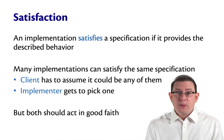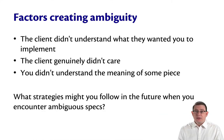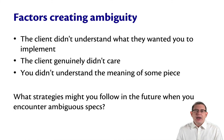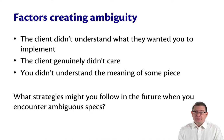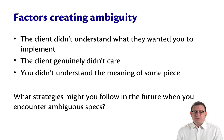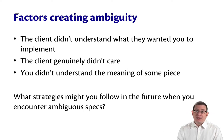But ambiguities can arise. Here are some factors that might create ambiguity. Maybe the client didn't really understand what they wanted you to implement — if the client had something in their head and they tried to ask for it, but they didn't quite manage to express it right. This happens all the time in software development. Maybe the client genuinely didn't care — they left a piece unspecified because they were fine with whatever you gave them as long as it met the rest of the specification. Or maybe you as an implementer don't actually understand the meaning of some piece of the specification, like a word whose technical meaning you didn't know.